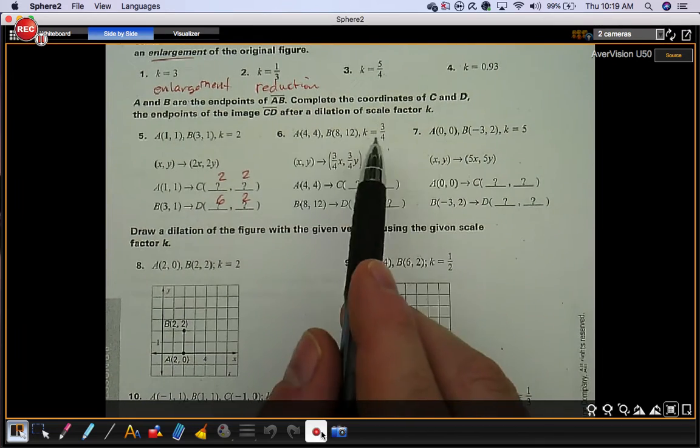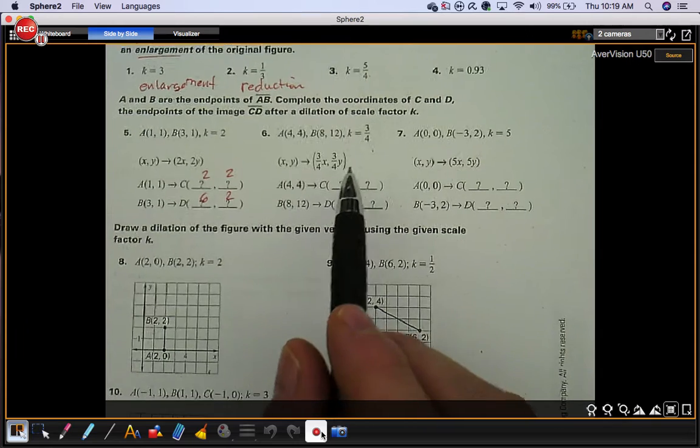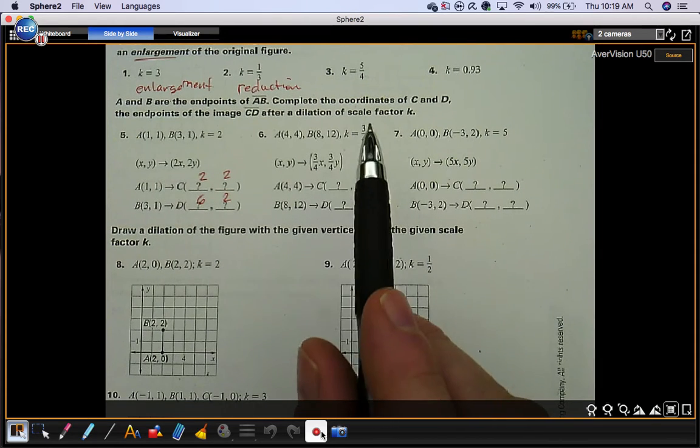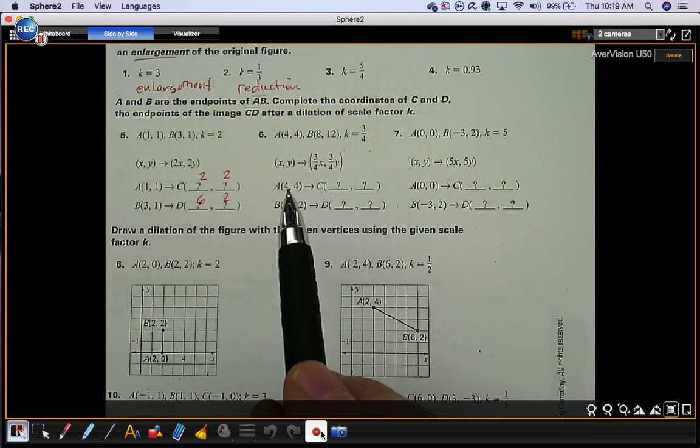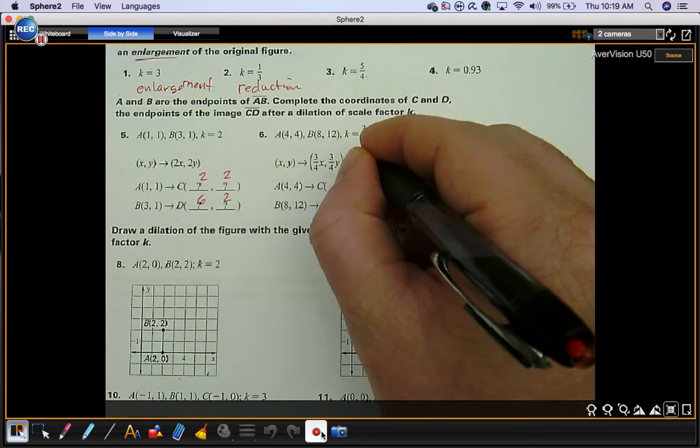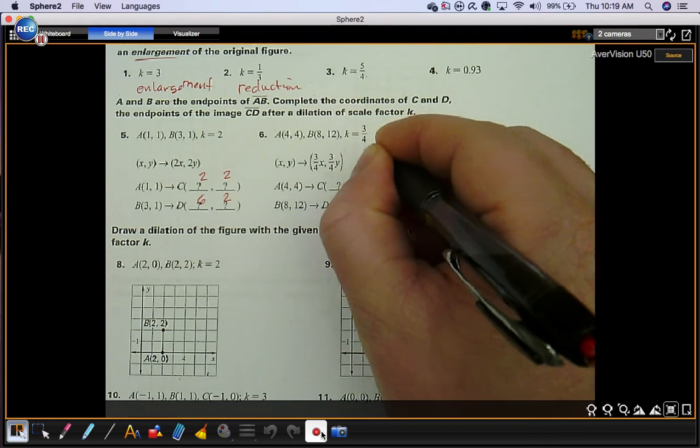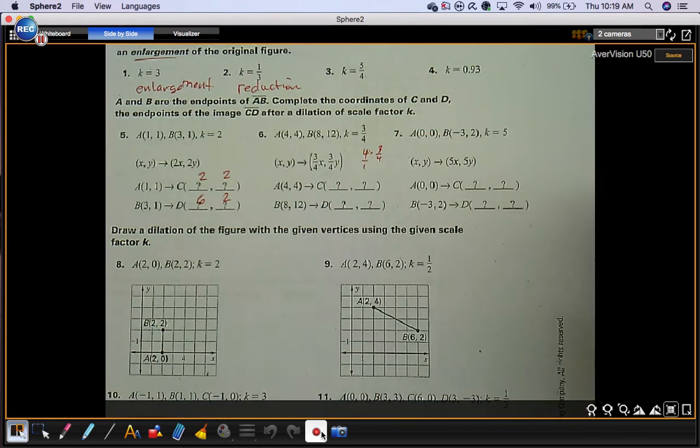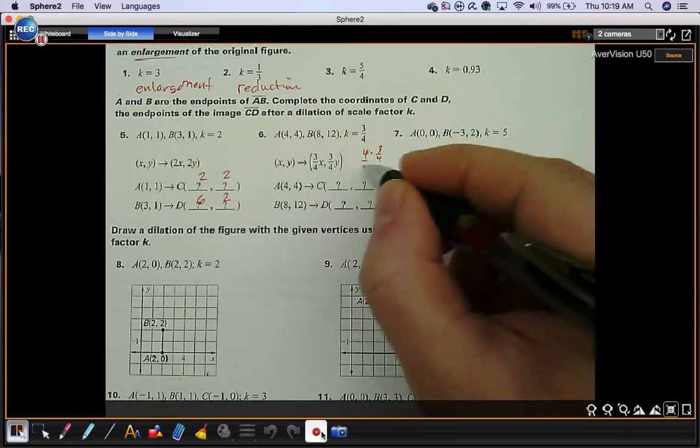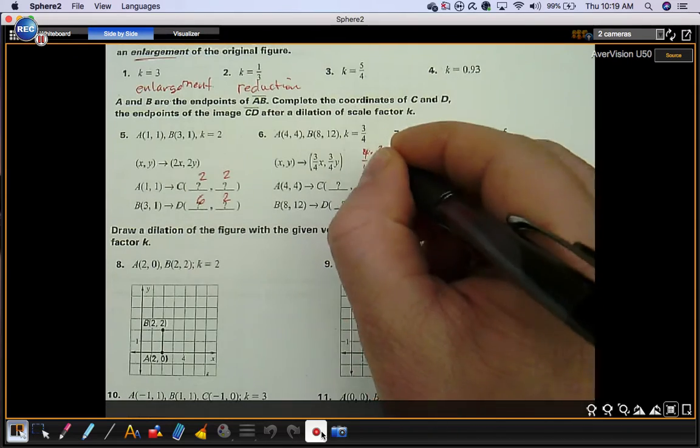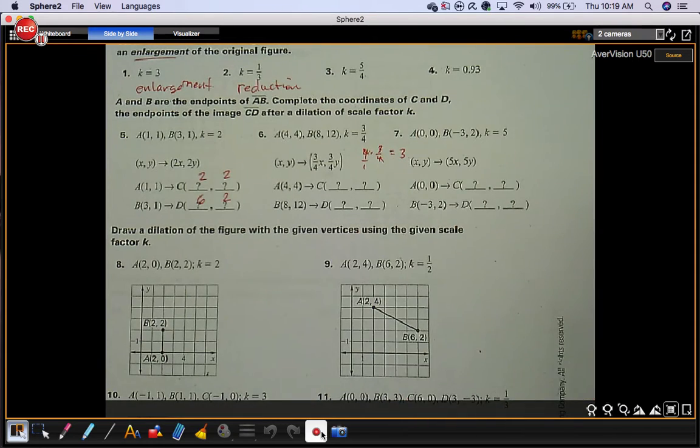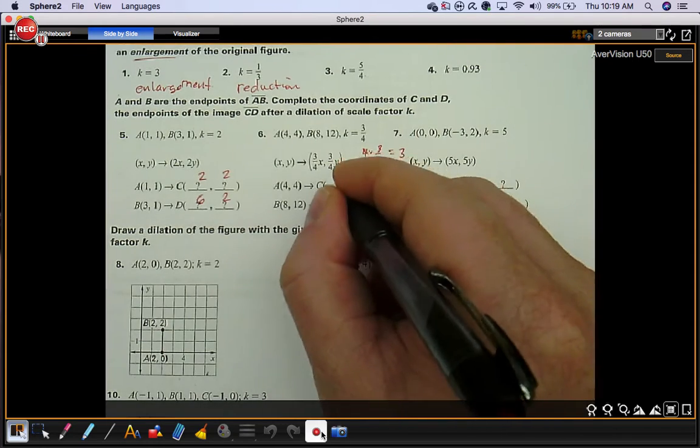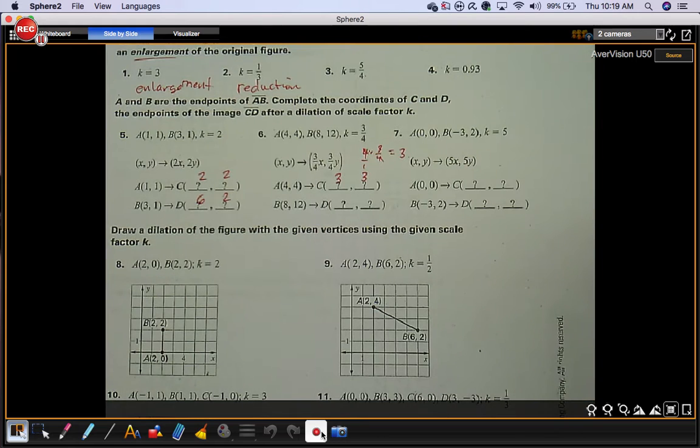We'll do number 6 because it has a fraction. So if your scale factor is 3 fourths, you're going to shrink the figure. You need to multiply this by 3 fourths. 4 times 3 fourths. I'll just write it out here. 4 times 3 fourths. 4 is really 4 over 1. When you multiply fractions, you multiply straight across. These 4s cancel. 3 fourths of 4 is 3. So both of those are 3.